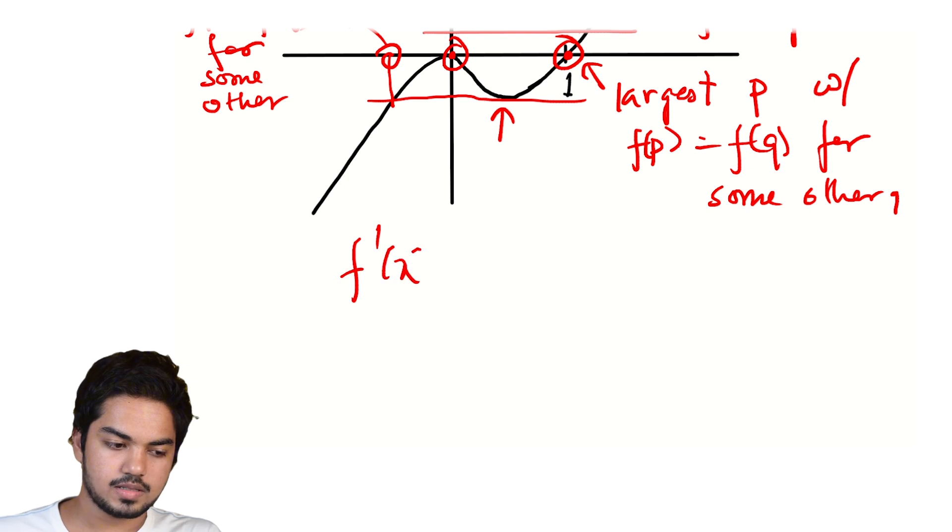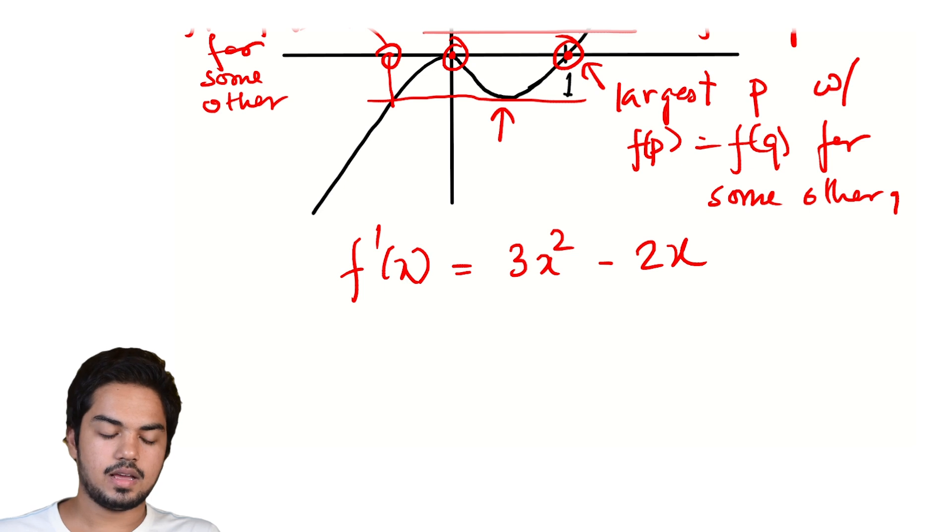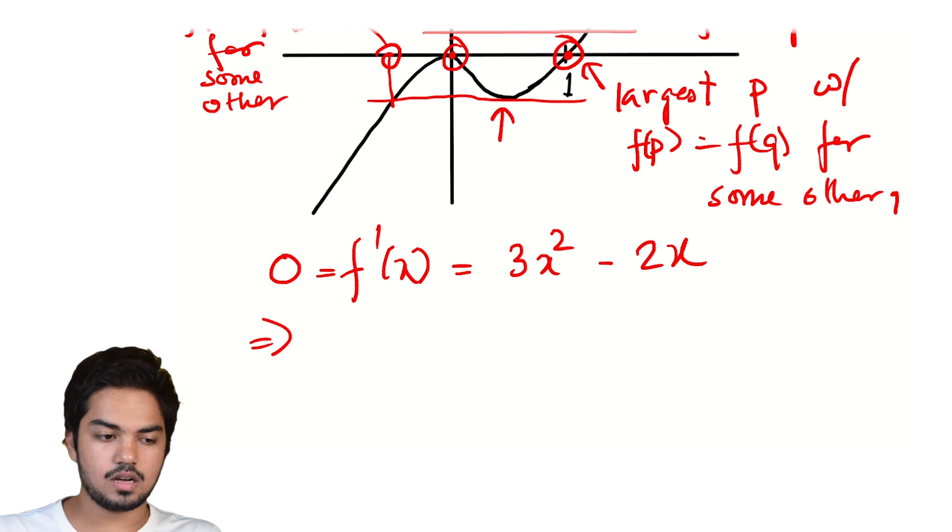So we found the largest, the good pair with the largest value. And to find the smallest value, we'll simply see where this local minima is. The local minima will be a point where the derivative vanishes.